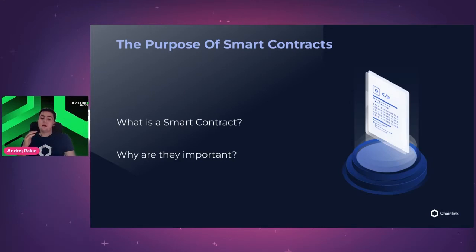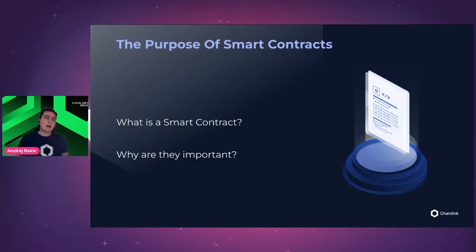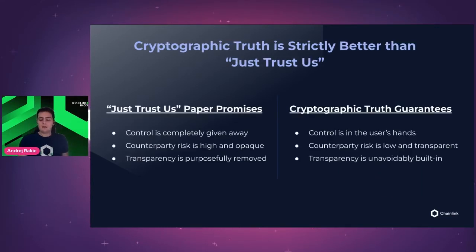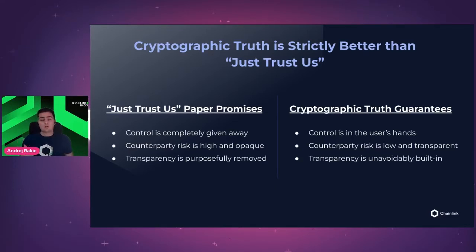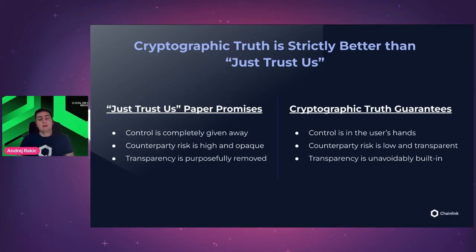So, to understand the Oracle problem, we first need to understand what a smart contract is. I'm sure most of you have already written a couple of them. But if you think about it, there is one gigantic problem that smart contracts solved, and that is the problem of trust. Traditional agreements are all around us — if you want to purchase a Netflix subscription, buy a new car, or sell a condo, you need to sign some kind of agreement. With traditional agreements, the problem is the so-called third-party contract operator, which can have conflicting interests — and you need to specifically trust that person or entity.